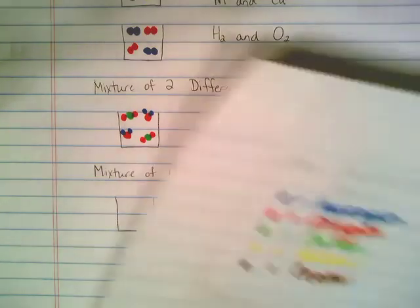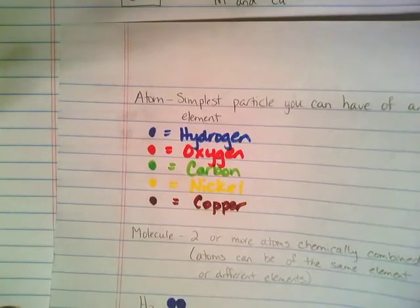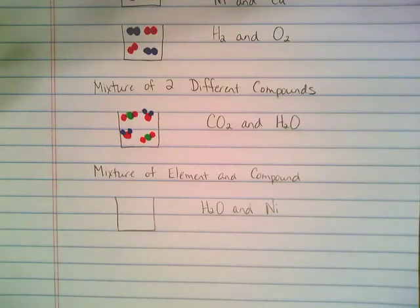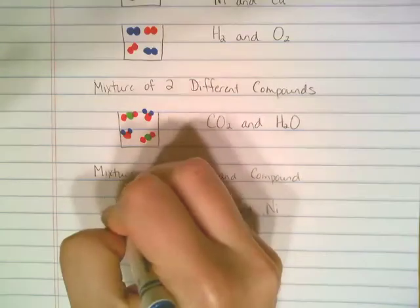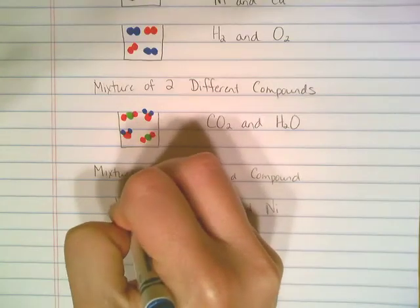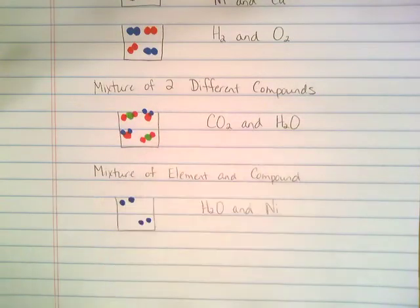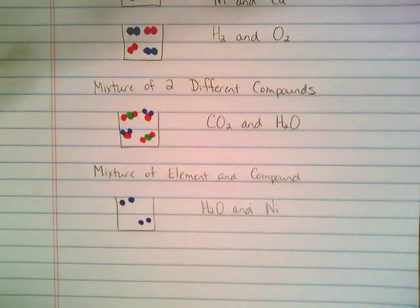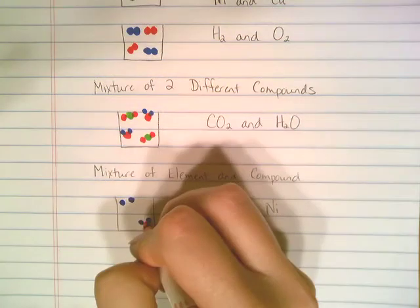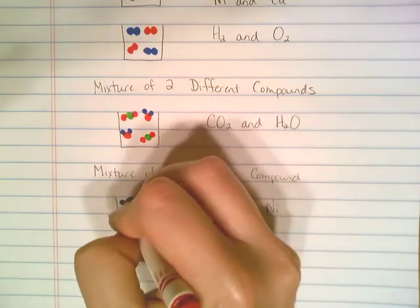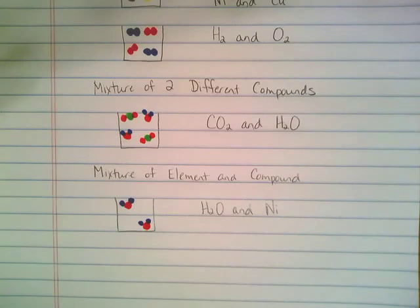One more time, here's the color code. So our water molecules would be two blue dots with a red in the center, and our nickel was yellow.